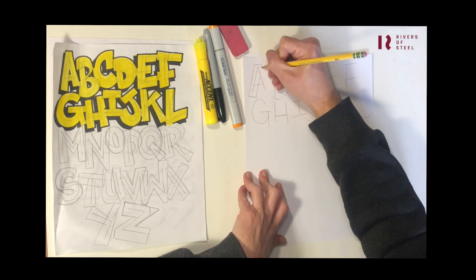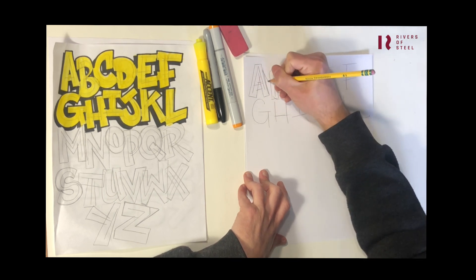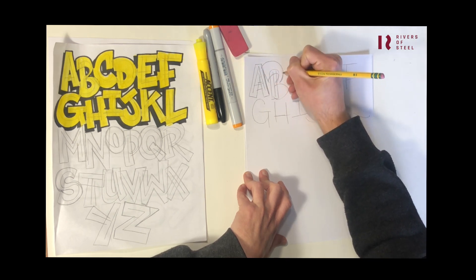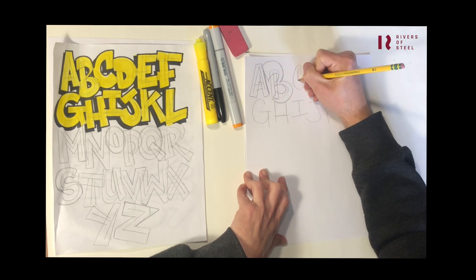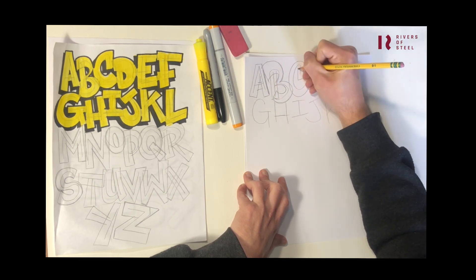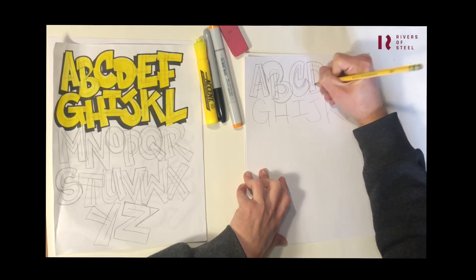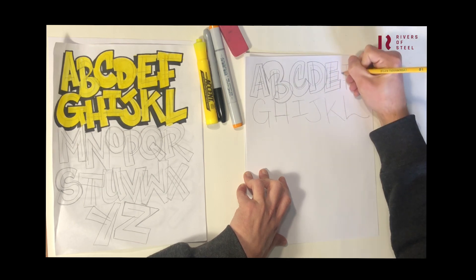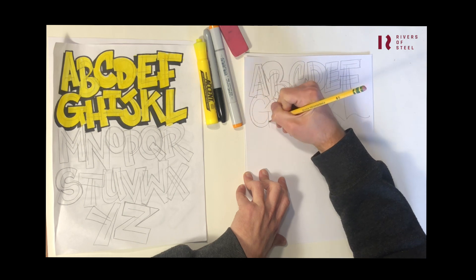I'm just going to start going around these right now. We definitely want to have overlapping lines. G has a lot of overlap.